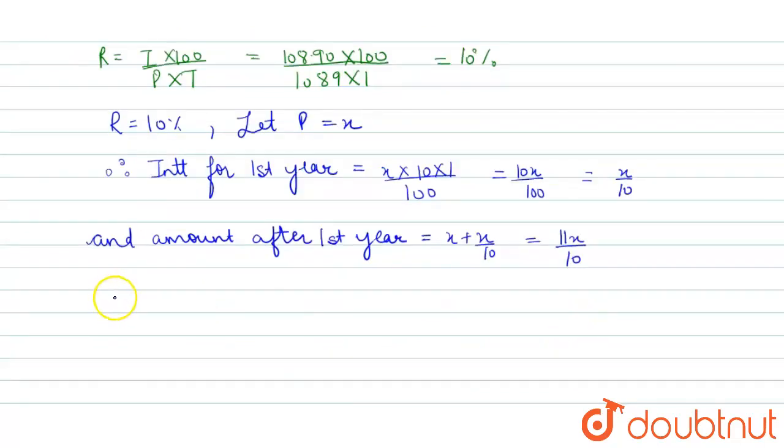Amount for the first year can be said as the principal of the second year. Principal for second year equals 11X/10.